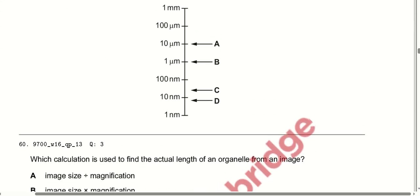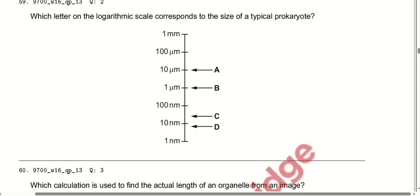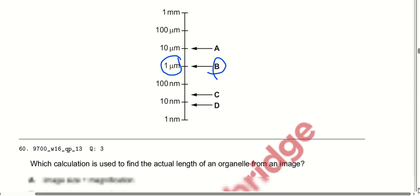MCQ number 59: which letter on the logarithmic scale corresponds to the actual size of a typical prokaryote? Because prokaryotes are very small — approximately 1 micrometre in size — option B is correct.